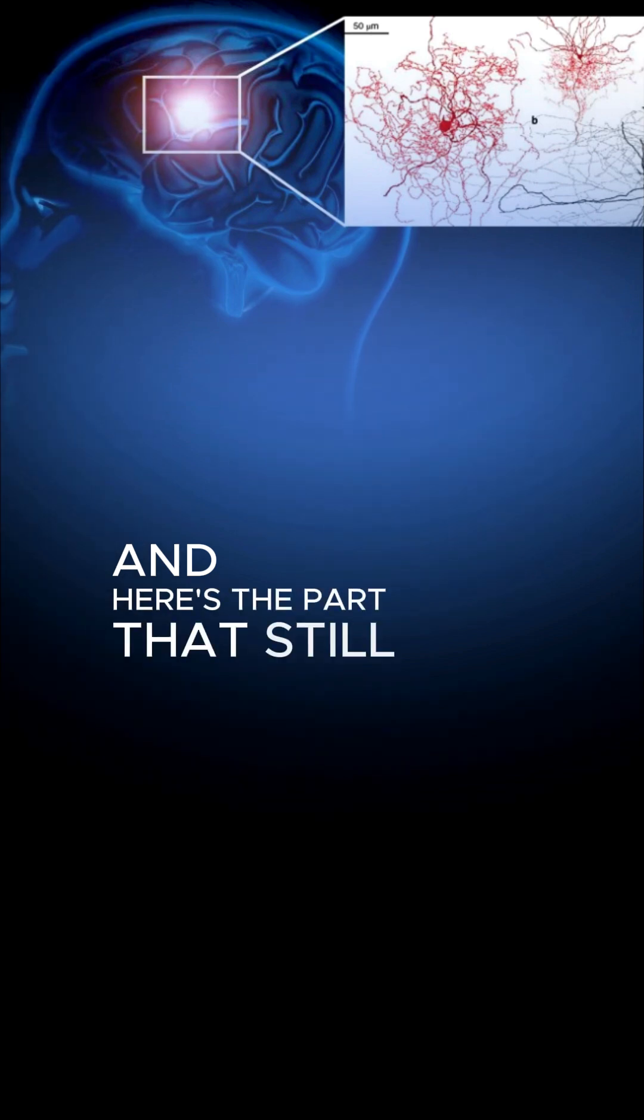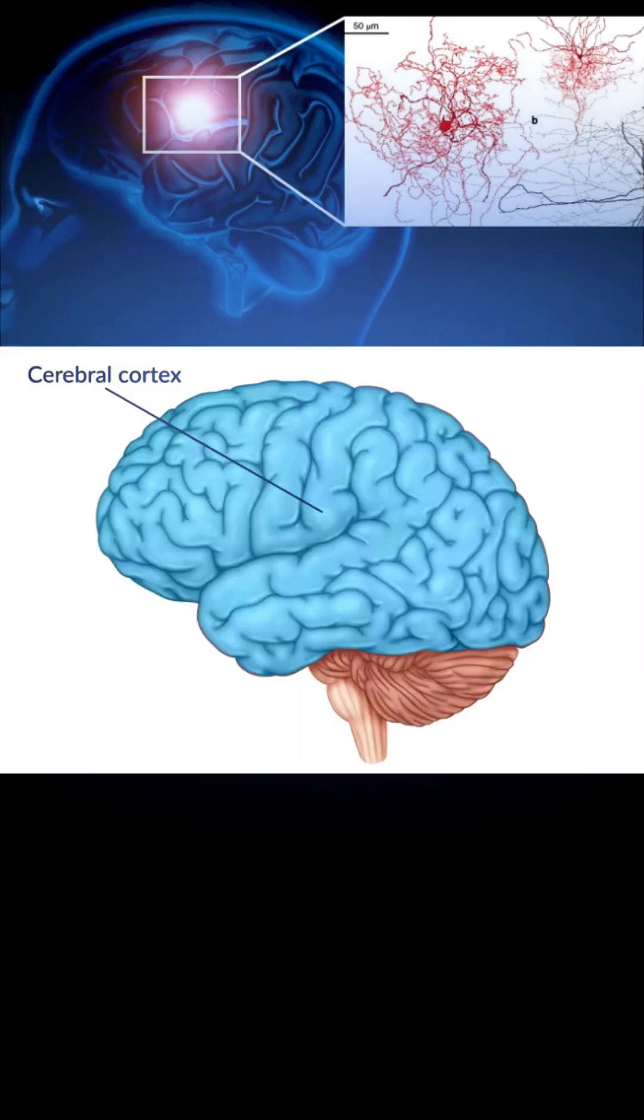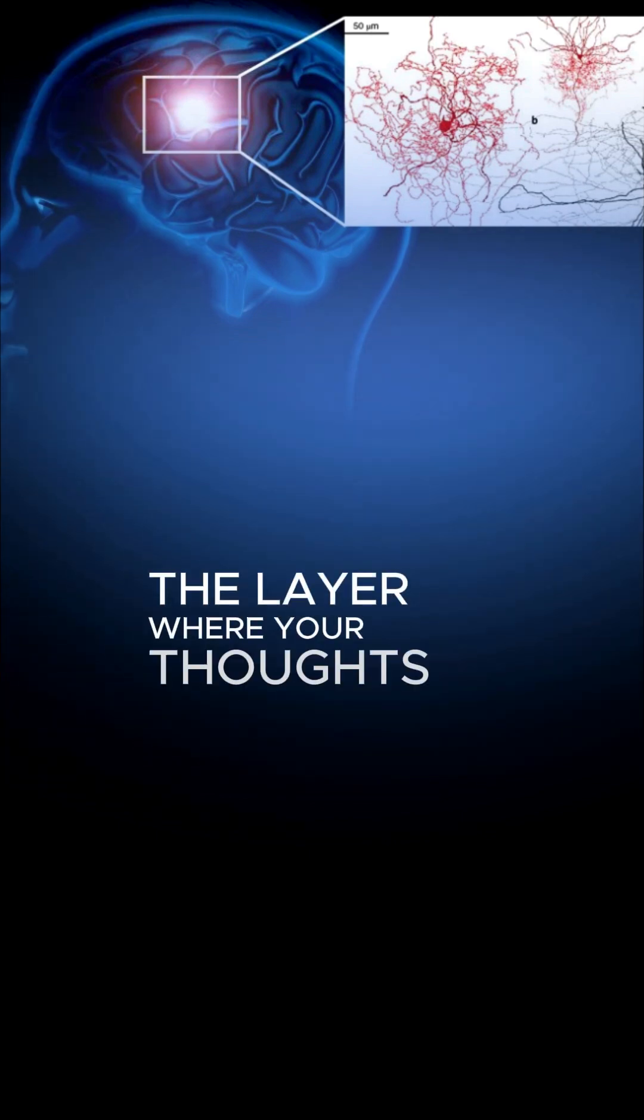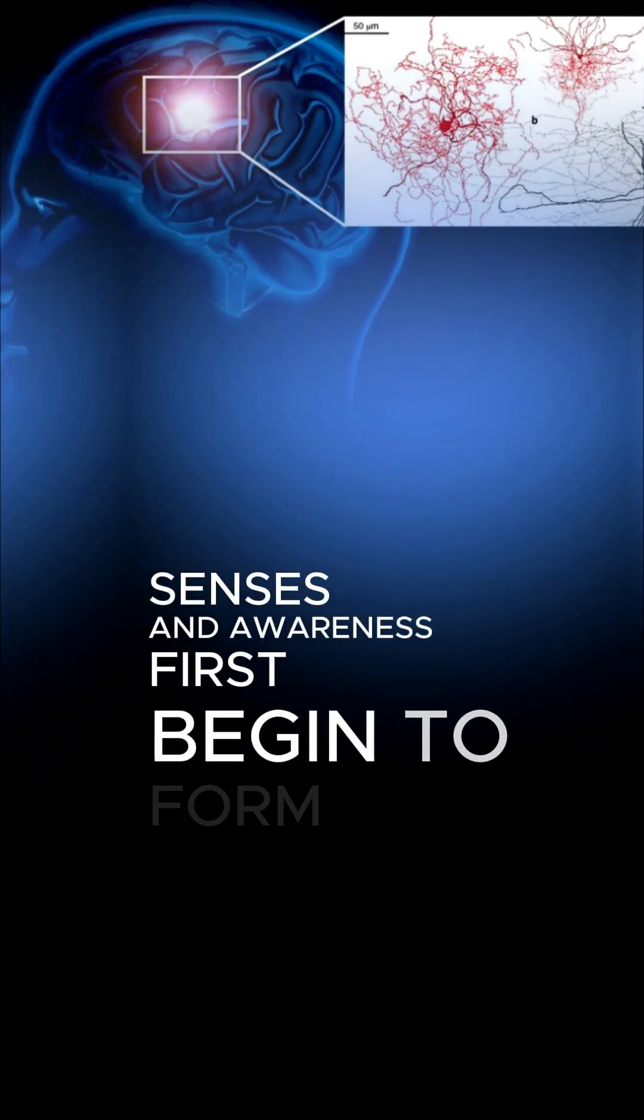And here's the part that still confuses researchers. These cells sit in the very top layer of your brain, the layer where your thoughts, senses, and awareness first begin to form.